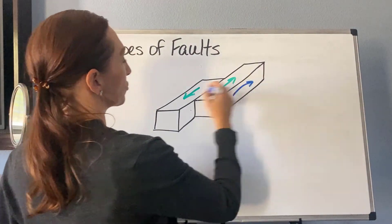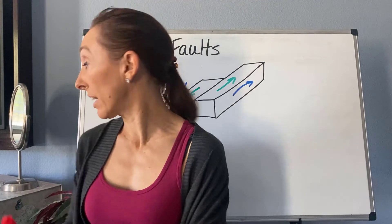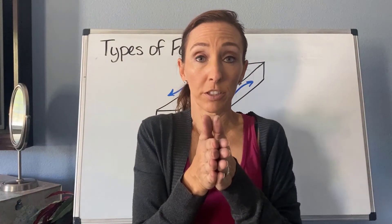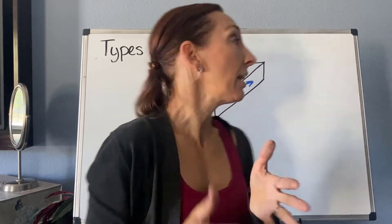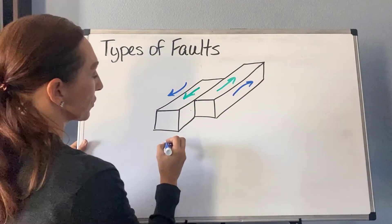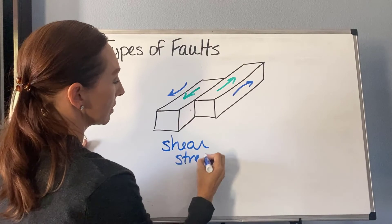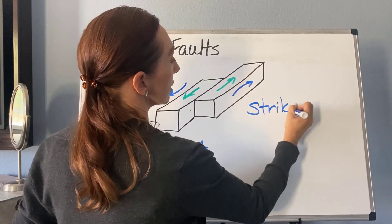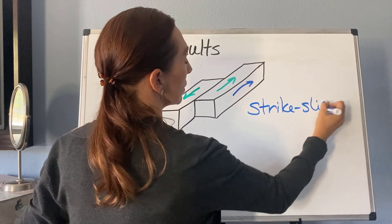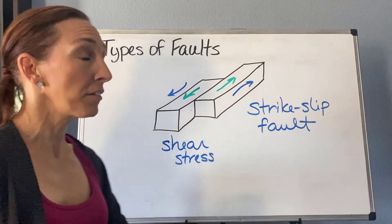This is due to shear stress — the stress goes in this direction. It's like taking a deck of cards held vertically between your hands and shoving one hand forward and one hand back — you get that shearing action. This is from shear stress and it's called a strike-slip fault. There's no hanging wall or foot wall with this type.